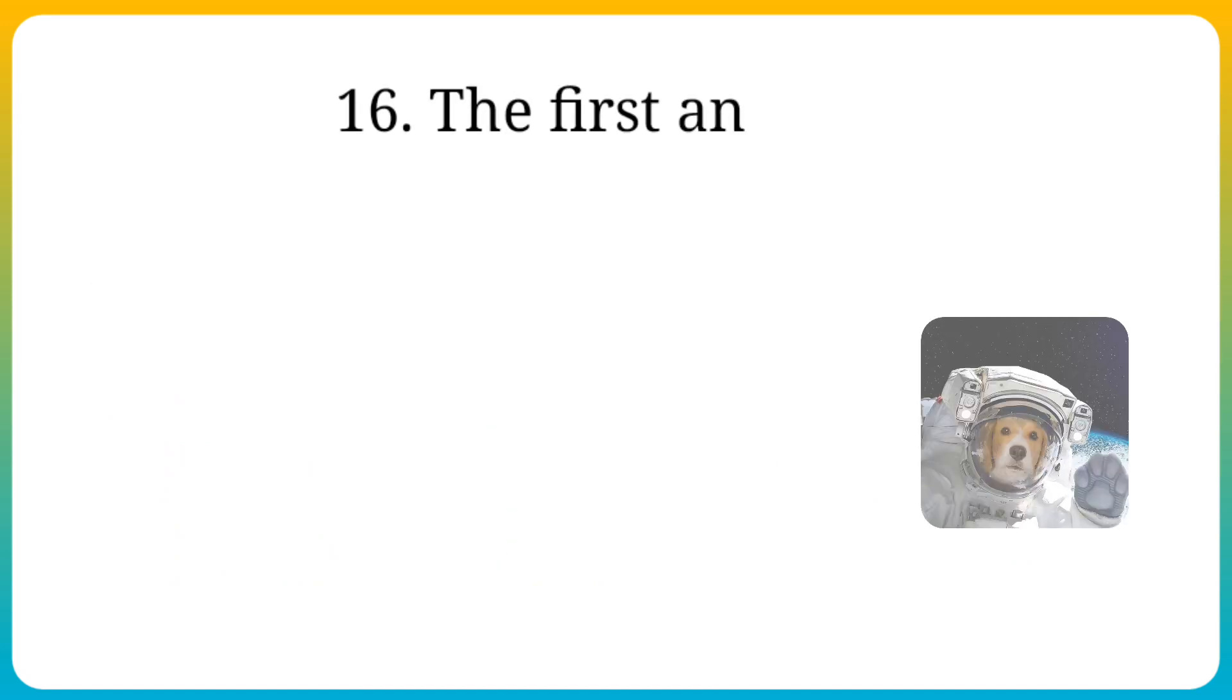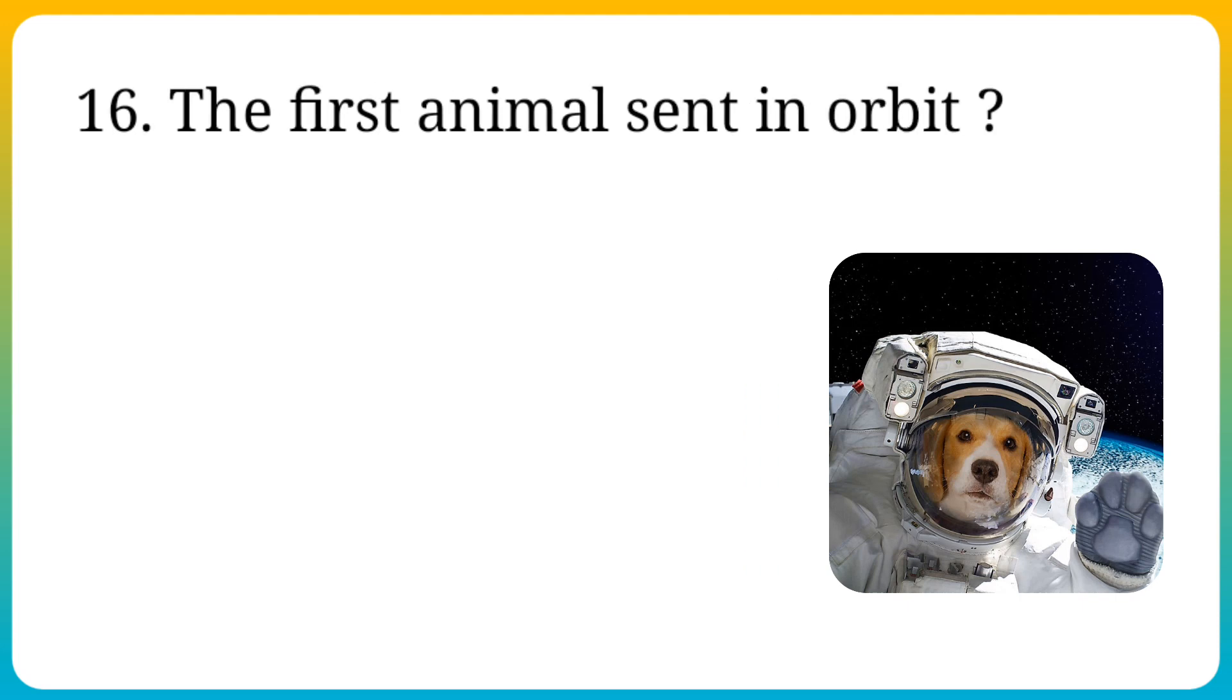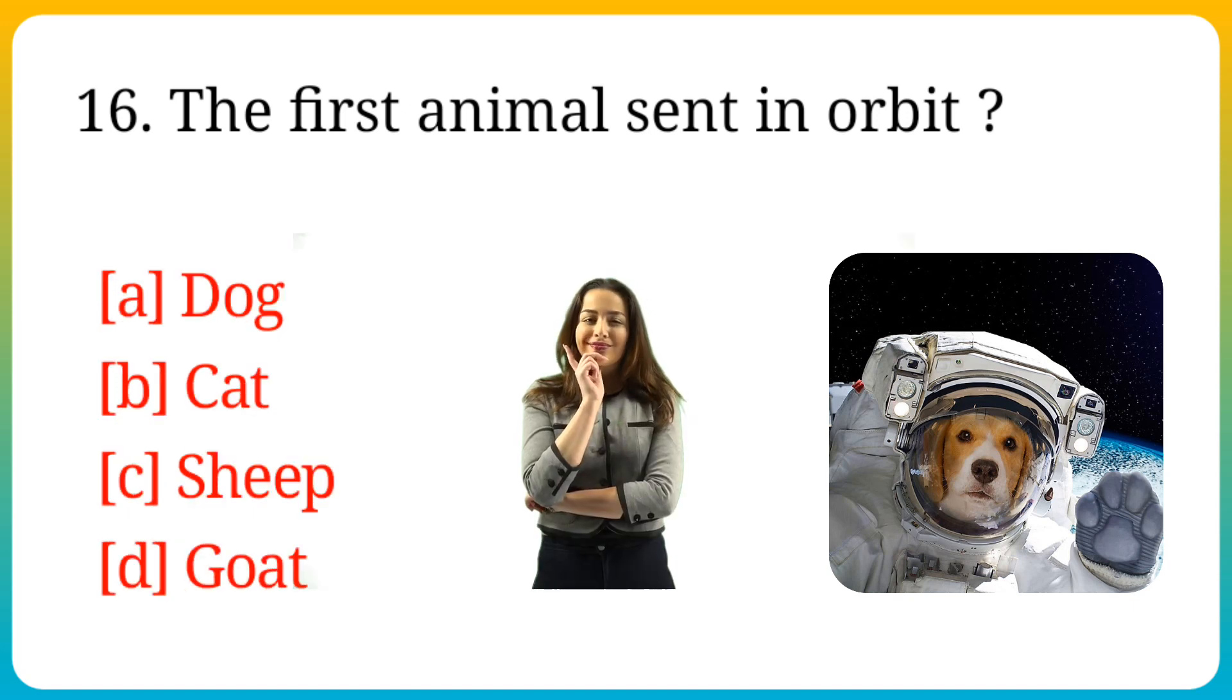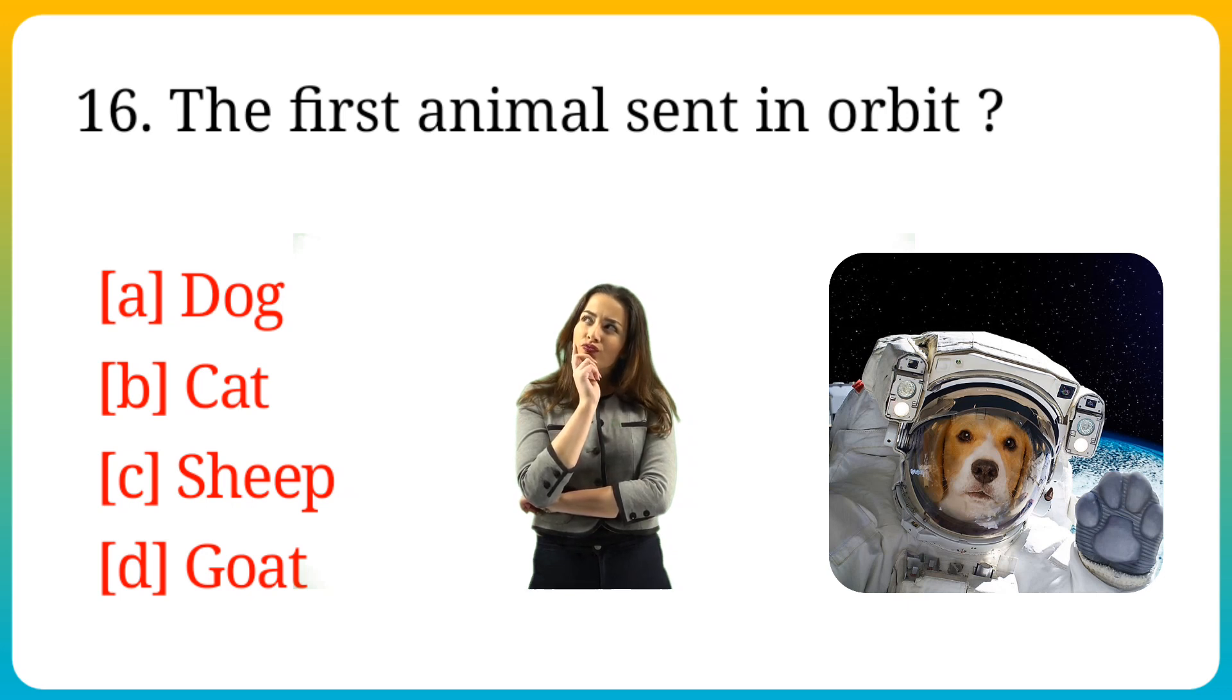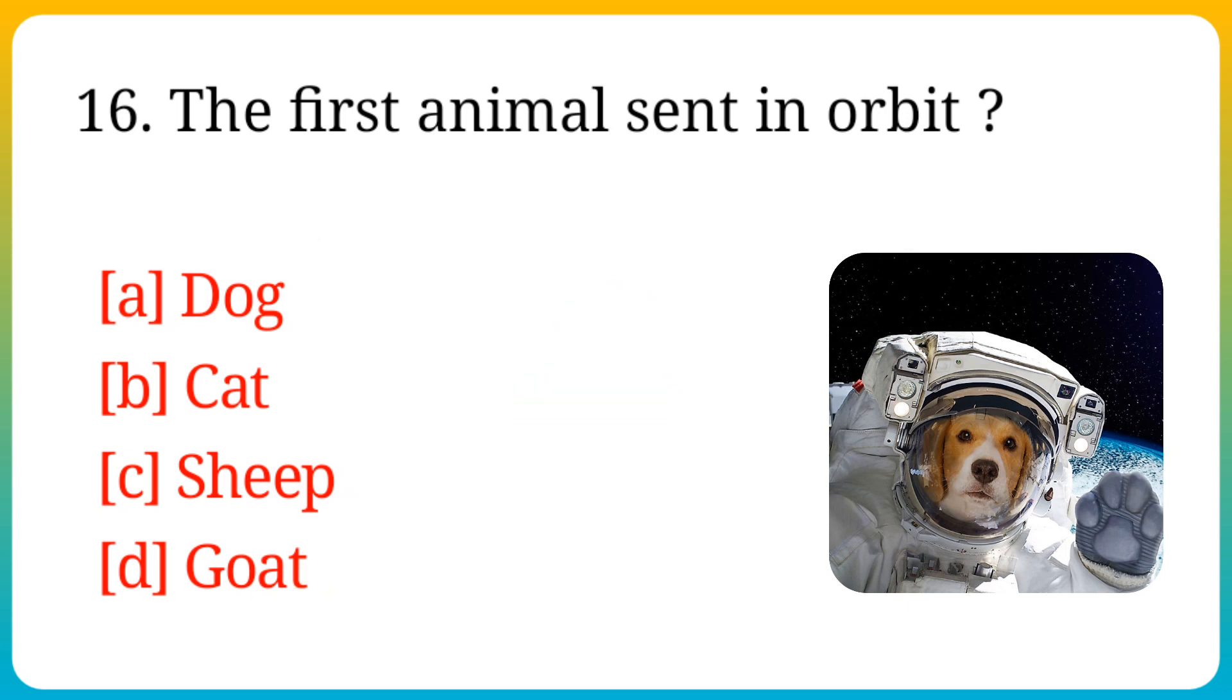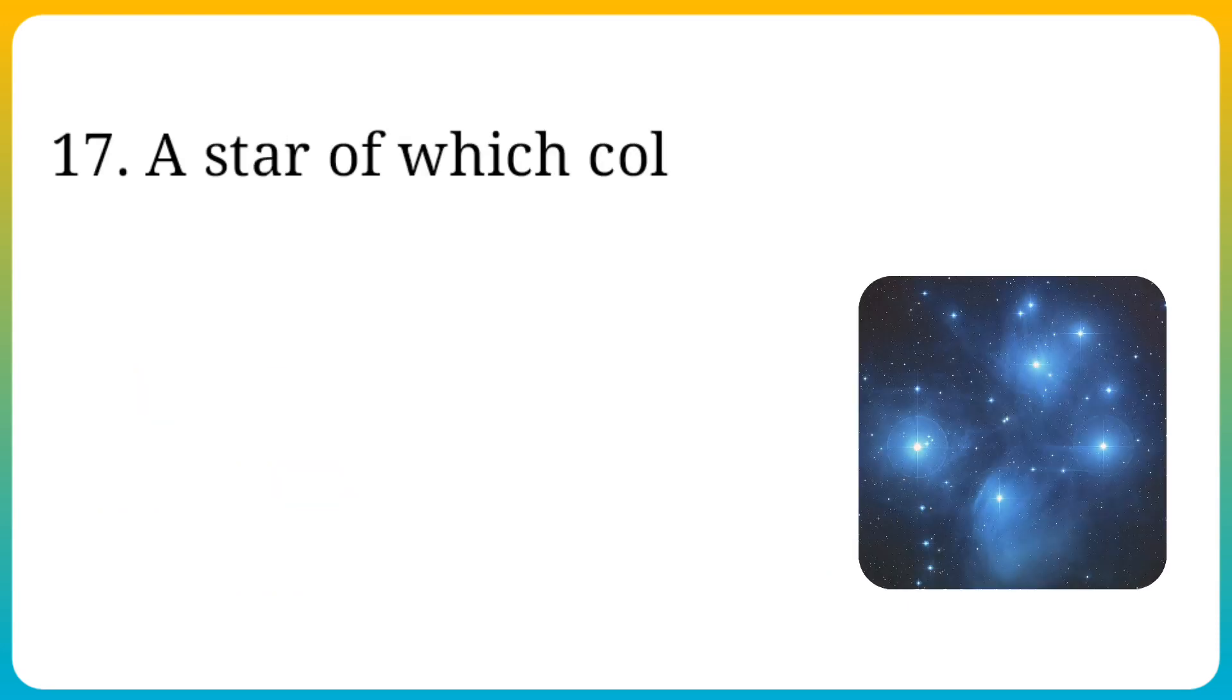Question number 16. The first animal sent in orbit. Options are: A. Dog, B. Cat, C. Sheet, D. Goat. Answer is option A. Dog.